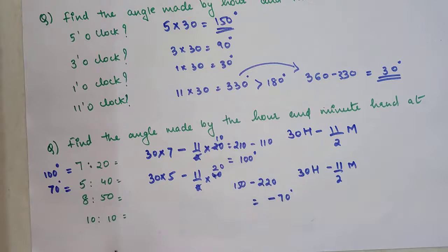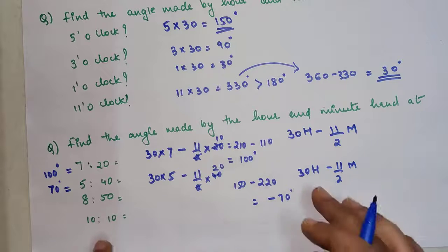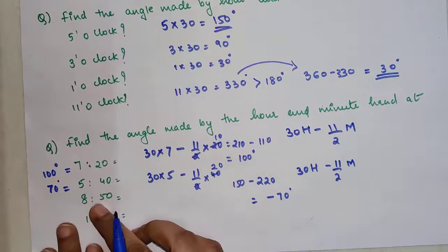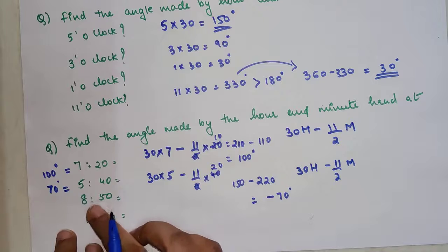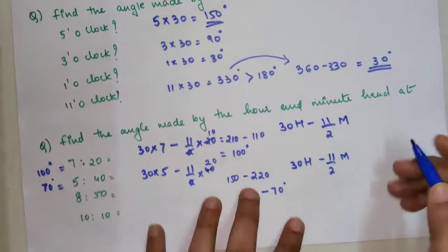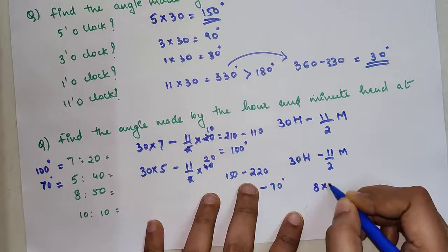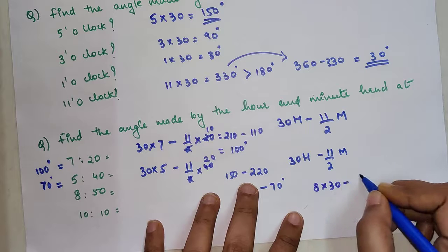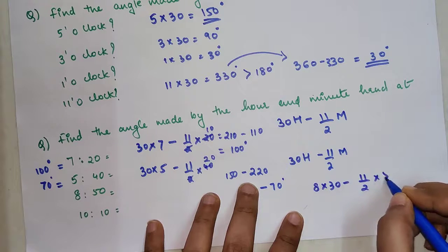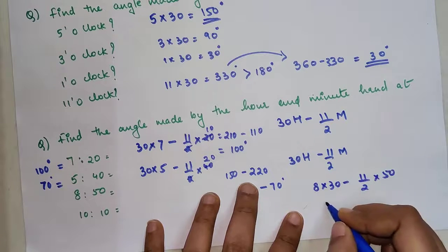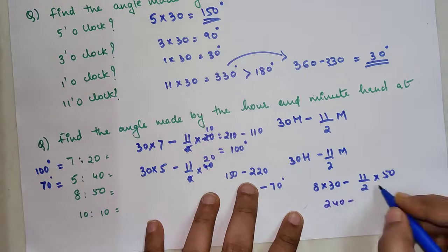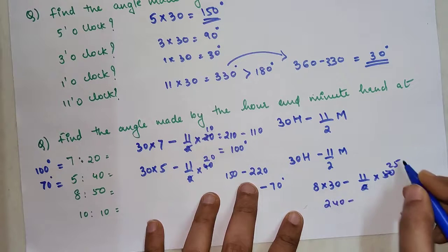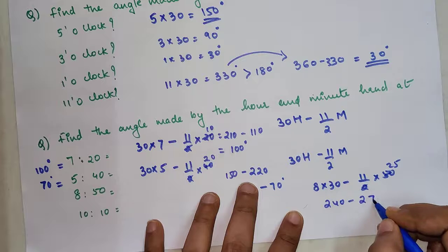So now let's do very quickly what happens when we have to find out what is the angle between 8 hours and 50 minutes. So you will have to multiply 8 into 30 minus 11 upon 2 into 50. So 8 into 30 is 240 minus this is 25. Multiply that with 275.